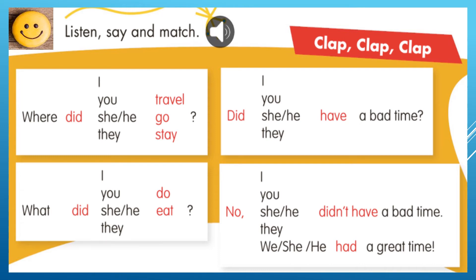It's time to check grammar. Por aquí tenemos preguntas en el tiempo pasado simple. Interrogative form. Primero observamos WH questions — where and what. Se le llama WH questions porque empiezan con palabras como: where, what, who, why, when. Son preguntas de información; las respuestas son diversas. Por aquí tenemos algunos ejemplos: Where did you travel? ¿A dónde viajaste? Where did she go? ¿A dónde fue ella? Where did they stay? ¿Dónde estuvieron ellos? Recordemos que para el pasado simple utilizamos el auxiliar DID para todos los pronombres y el verbo se conserva en forma base: travel, go, stay.